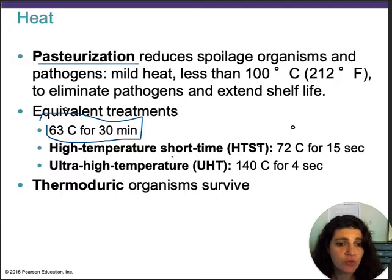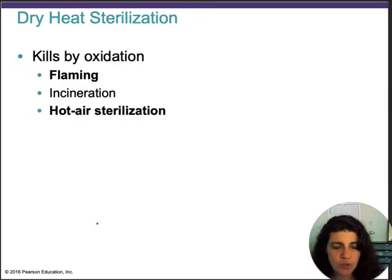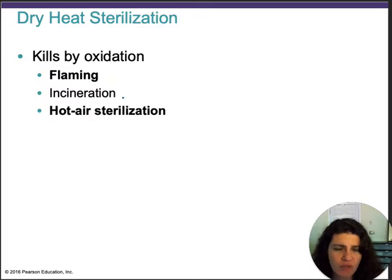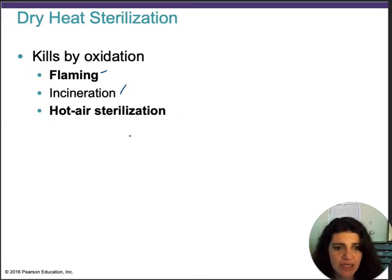Other methods include ultra-high temperature short time and ultra-high temperature processing, which use shorter times at higher temperatures and can also be used for food. Dry heat is usually for materials — incineration turns material into ashes, flaming is used in the lab to flame loops and the mouths of tubes during aseptic technique, and hot air is another option.